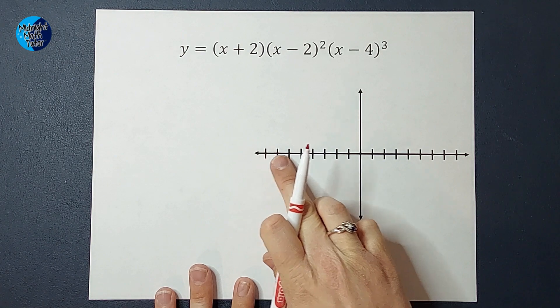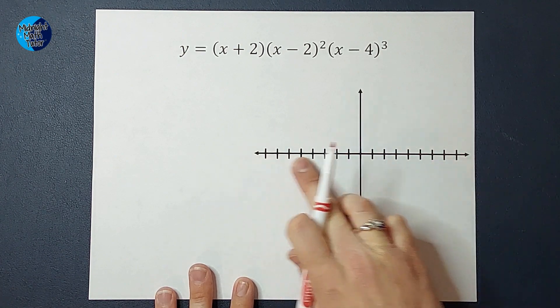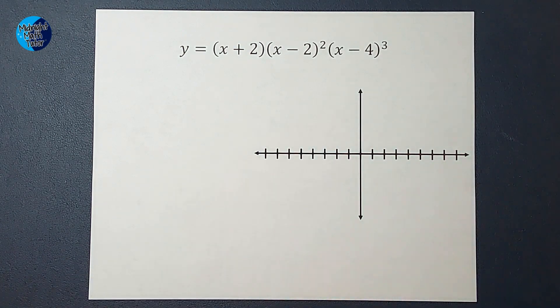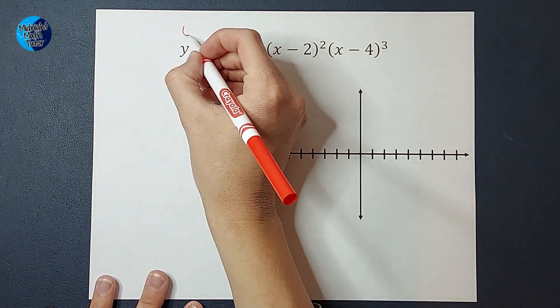When I say zeros, we're looking for where my graph touches the x-axis. So that's when y is zero. So we're really setting this equal to zero.